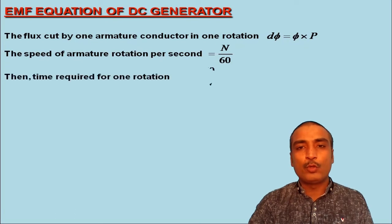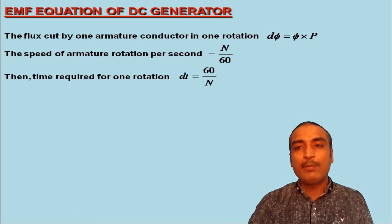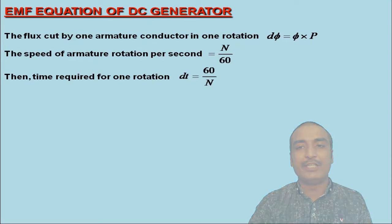then the time required for one rotation would be equal to 60/N and we have designated this by dt.